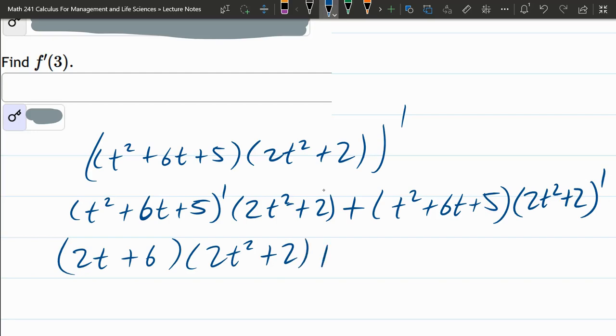There's no derivative on that term. So just copy it down. No derivative on this term. But we do need to do this derivative. So t squared derivative is 2t times 2. 4t, derivative of 2 is zero.